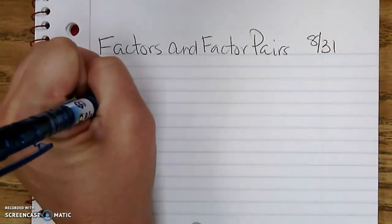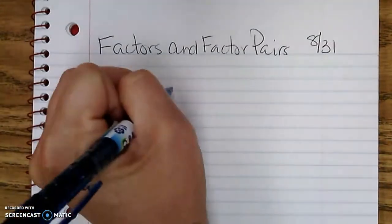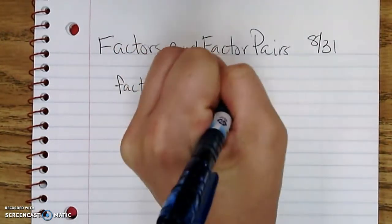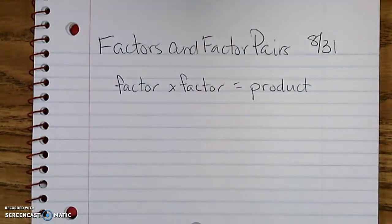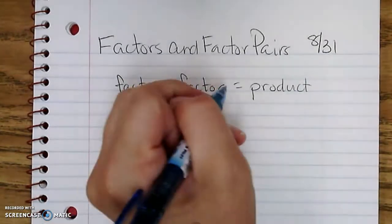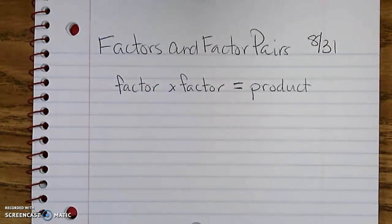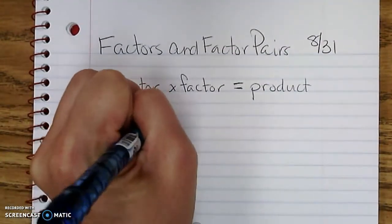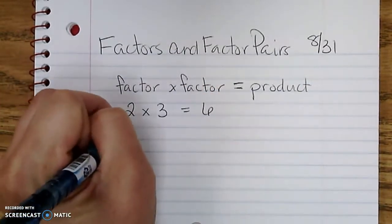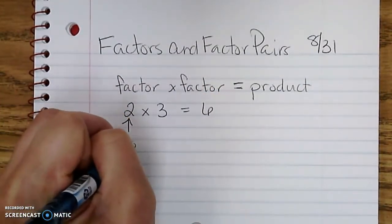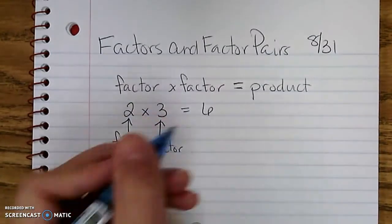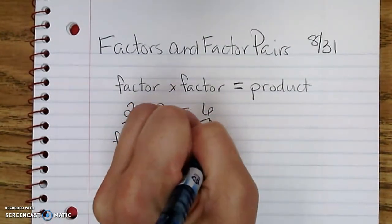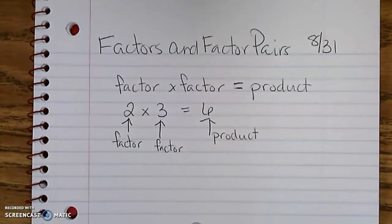In any multiplication problem we have factor times factor equals product. The two numbers that we multiply together are called factors, and the answer that those factors produce is called a product. For instance, if I have 2 times 3 equals 6, then 2 is a factor of 6, 3 is a factor of 6, and 6 is the product of 2 and 3.